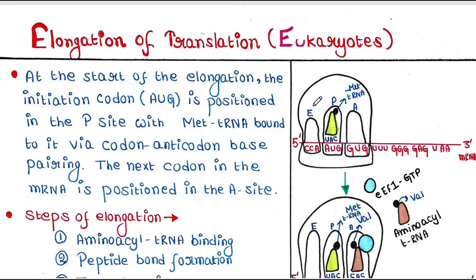After the initiation of translation, the start codon of mRNA — that is AUG — is placed in the P site of the ribosome and is bound to tRNA. This is the initiator tRNA, also called met-tRNA, since it carries the amino acid methionine. The interaction is caused via codon-anticodon base pairing, where the codon is AUG in the mRNA and the anticodon in the tRNA is UAC.